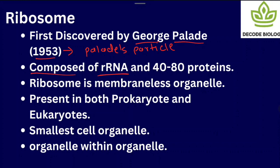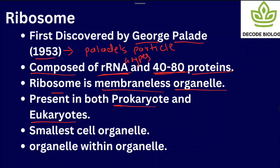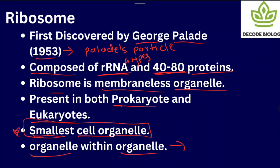Ribosome is composed of rRNA — four types of rRNA are present in ribosomes along with around 40 to 80 proteins. Ribosome is a membrane-less organelle; it does not have a membrane, which is why it is present in both prokaryotes and eukaryotes. It is the smallest cell organelle — this is a very important point to remember.